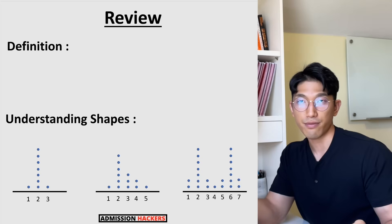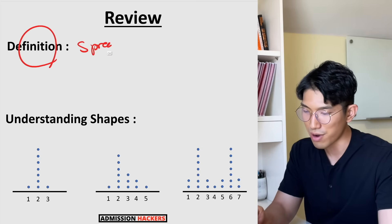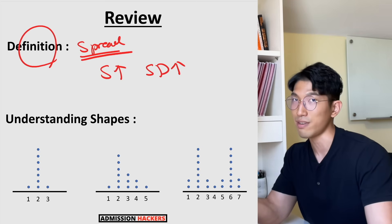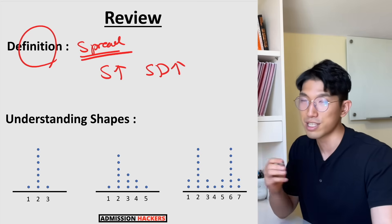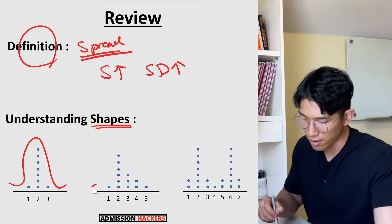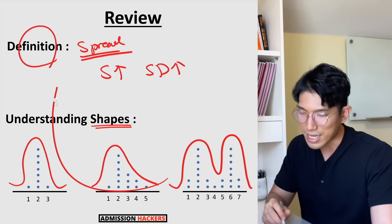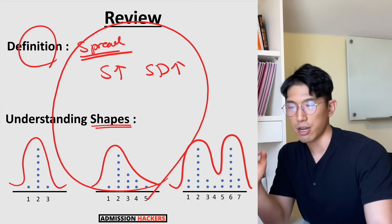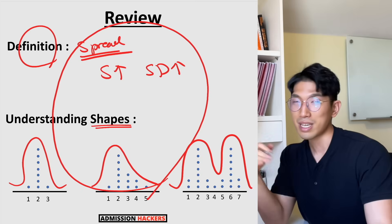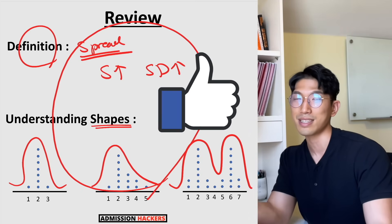In summary, when it comes to standard deviation on the SAT, two things you need to know: first is the definition — high spread means high standard deviation. Second, understand how standard deviation works based on graph shapes: there's the bell curve, the skewed curve, and the double top. As long as you understand these two things, every single standard deviation question on the SAT is going to be very easy. If you found this video helpful, give a thumbs up, leave any questions in the comments, and I'll see you in the next video.